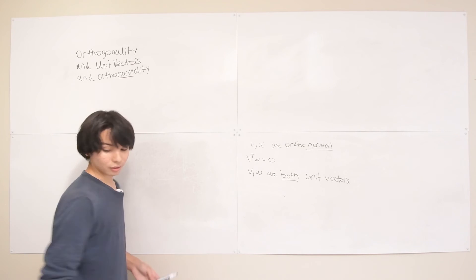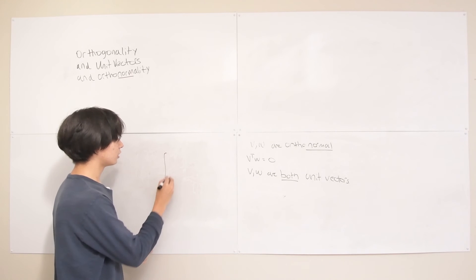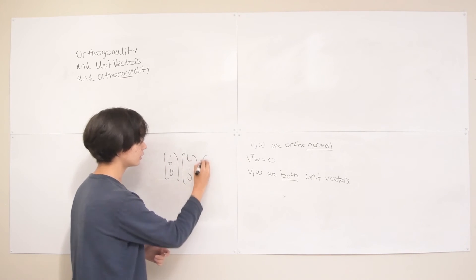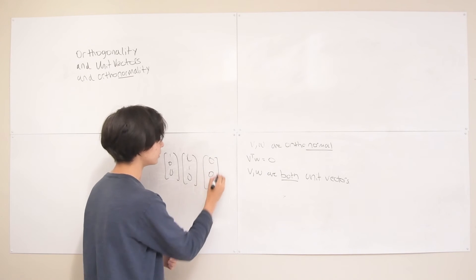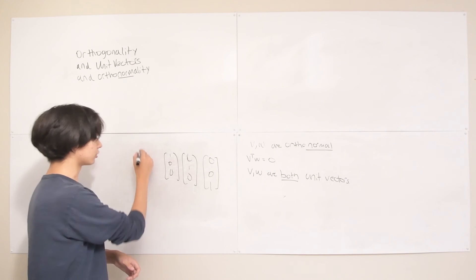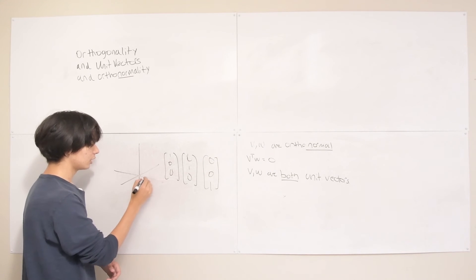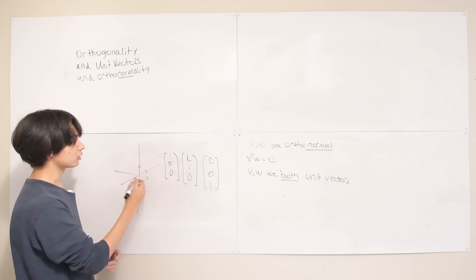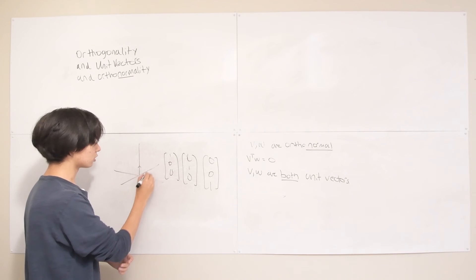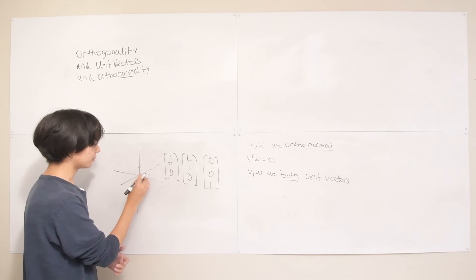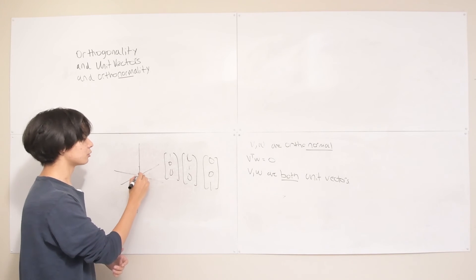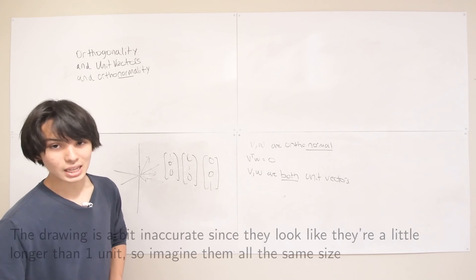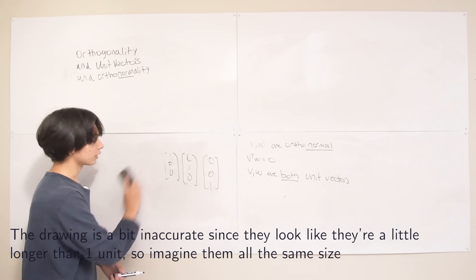In 3D, [1,0,0], [0,1,0], and [0,0,1] form a triplet of orthonormal vectors — one along each coordinate axis. Remember that orthonormal sets can be much more complex than just coordinate axes — any set of unit vectors pointing in mutually perpendicular directions qualifies. The reason orthonormality is such an important concept becomes clear when we get to orthogonal matrices.